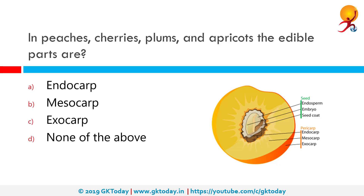In peaches, cherries, plums and apricots, the edible parts are the endocarp. Endocarp is a botanical term for the inside layer of pericarp or fruit which directly surrounds the seed. It may be membranous as in citrus, or thickened and hard as in stone fruits like peaches and cherries.